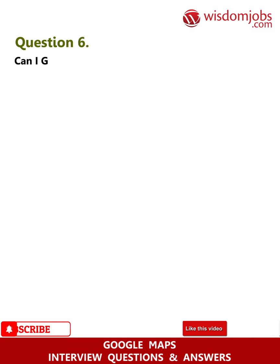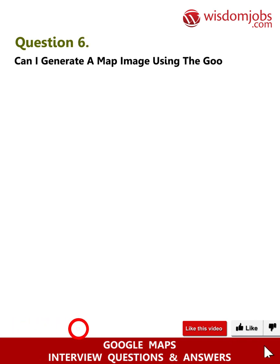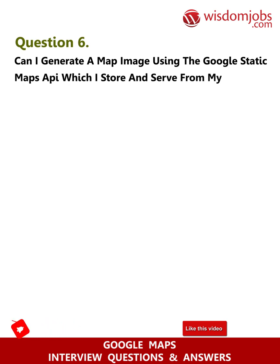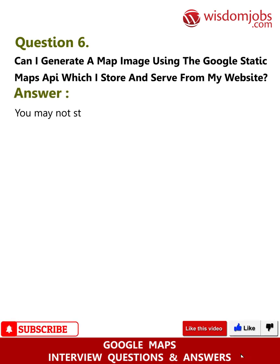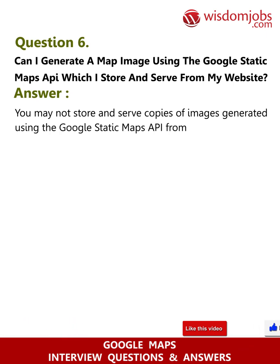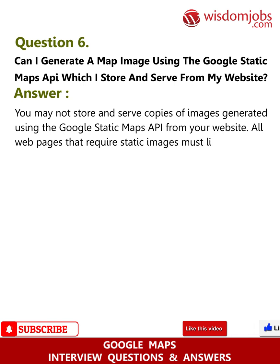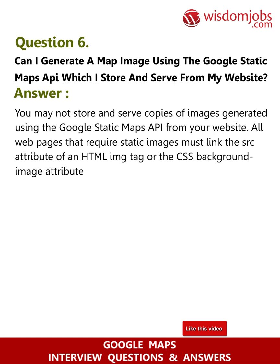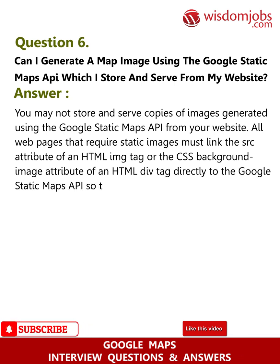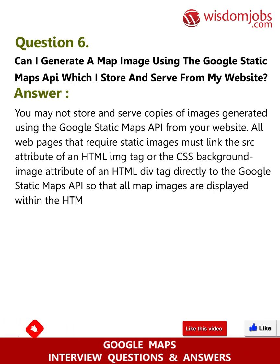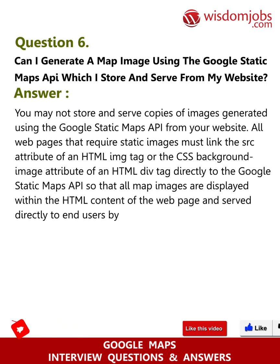Question 6: Can I generate a map image using the Google Static Maps API which I store and serve from my website? Answer: You may not store and serve copies of images generated using the Google Static Maps API from your website. All web pages that require static images must link the SRC attribute of an HTML image tag or the CSS background-image attribute of an HTML div tag directly to the Google Static Maps API, so that all map images are displayed within the HTML content of the web page and served directly to end-users by Google.